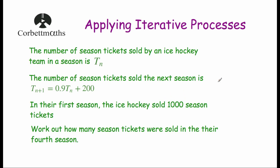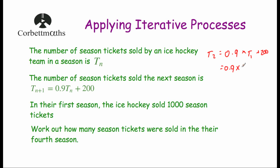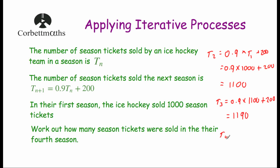We know 1,000 tickets were sold in the first season. The number sold in the second season equals 0.9 times 1,000 plus 200 — that gives us 1,100, because 0.9 times 1,000 is 900, plus 200 is 1,100. The number in the third season would be 0.9 times 1,100 plus 200, which gives us 1,190. And in our fourth season, 0.9 times 1,190 plus 200 gives us 1,271 season tickets sold.